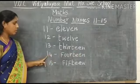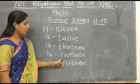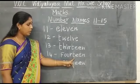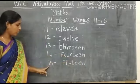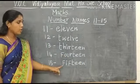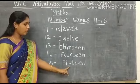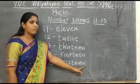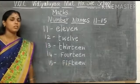What number is this? This is number 14. What is the spelling of 14? F, O, U, R, T, E, E, N. 14. What number is this? This is number 15. What is the spelling of number 15? F, I, F, T, E, E, N. 15. Ok children, did you understand? Thank you.